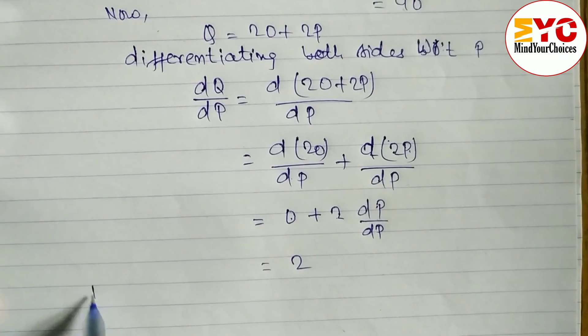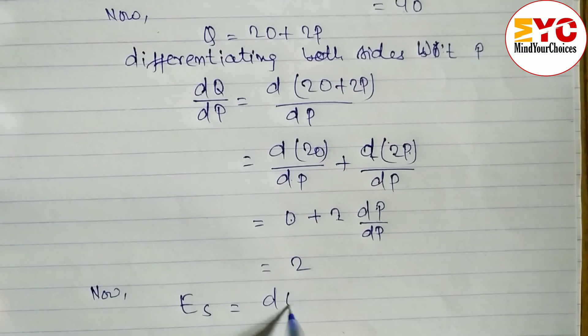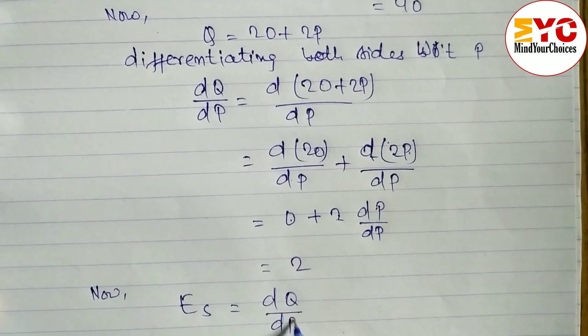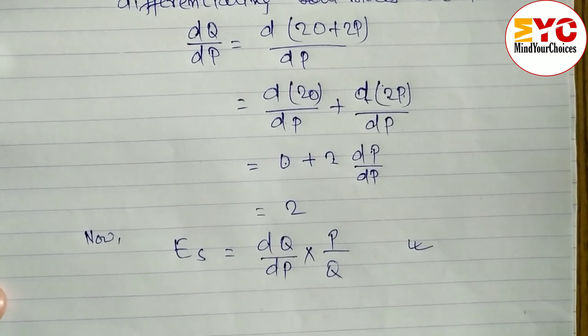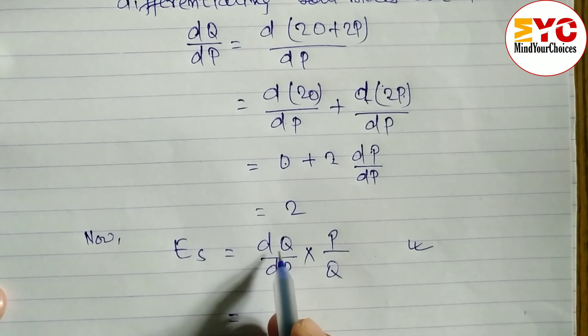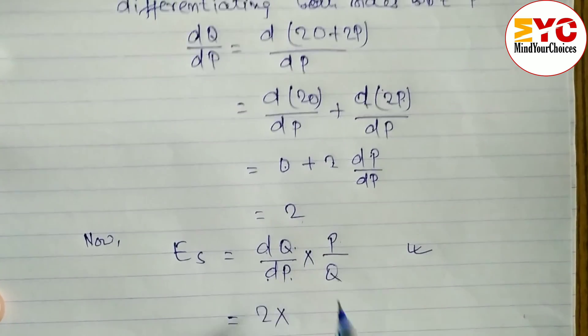Now what is the formula of elasticity of supply? You have to learn this formula. Elasticity of supply formula: dQ/dP × P/Q. dQ/dP we got the value 2, so we write 2. Now P/Q, the value of P is 10 and the value of Q is 40.